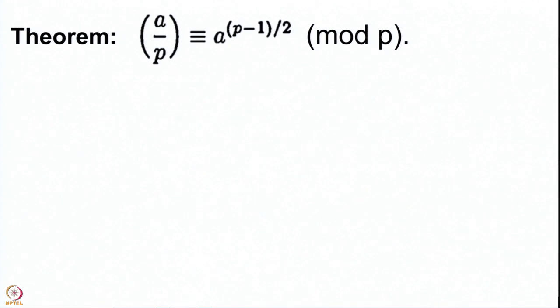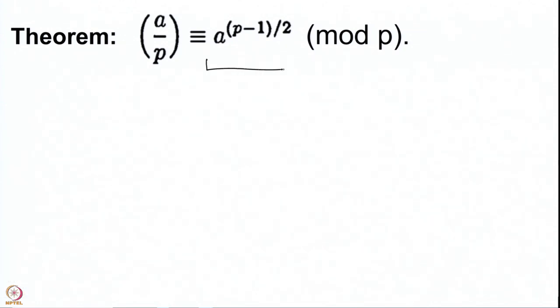We have defined our Legendre symbol, but in the last lecture we proved a very remarkable result: the Legendre symbol (a/p) can be computed simply by computing a particular power of a modulo p. All we have to do is compute a^((p-1)/2) mod p. So for instance, if you were to compute the Legendre symbol of a number a modulo some moderately large prime, you would only need to compute this particular power, which is not a very difficult thing for a computer.